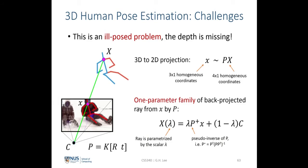It's not just an inverse problem but also an ill-posed problem where the depth is missing. Given this image, we only know the xy pixel location. We would not know where the corresponding 3D location lies, because given a particular light ray — which always travels in a straight line — the 3D location of this pixel can lie anywhere in front of the camera. So there's a one-parameter family of possible solutions for just this pixel alone, parameterized by this expression.